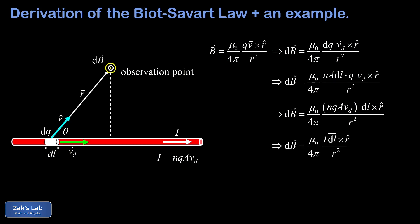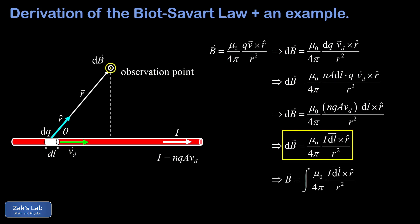Making that replacement, we obtain the differential form of the Biot-Savart law. This tells us the magnetic field contribution of a tiny slice of wire at a given observation point. Adding up all contributions with an integral is what people usually mean by the Biot-Savart law, and we now have a general method for computing the magnetic field due to any current-carrying wire.